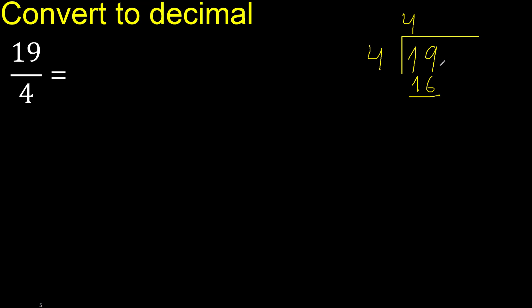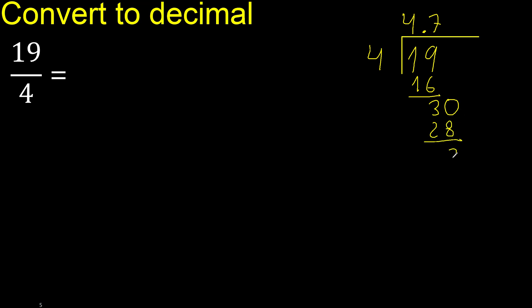19 minus 16 is 3. There is no next number, so we complete with 0 and a decimal point. We now have 30. 4 multiplied by 8 is greater, so 4 multiplied by 7 is 28 — that is not greater. 30 minus 28 is...